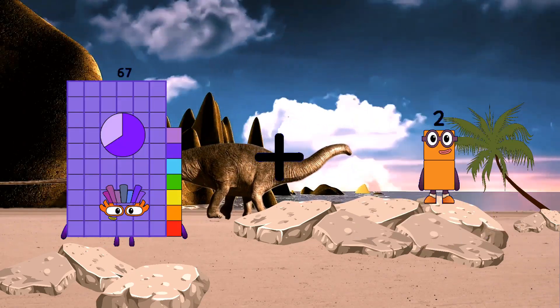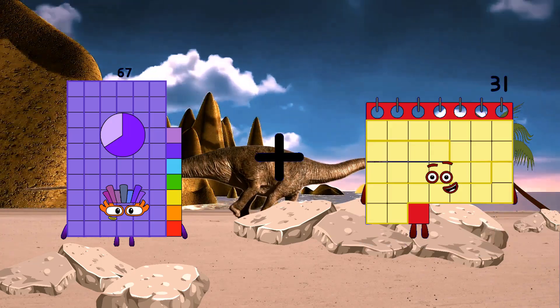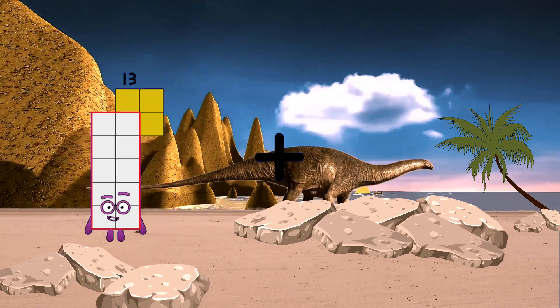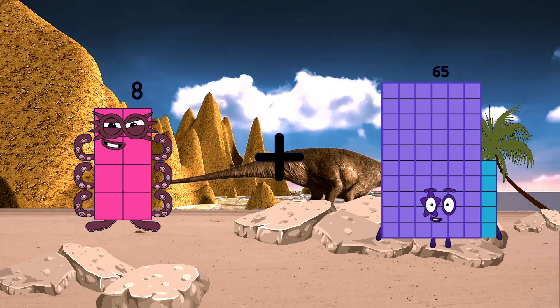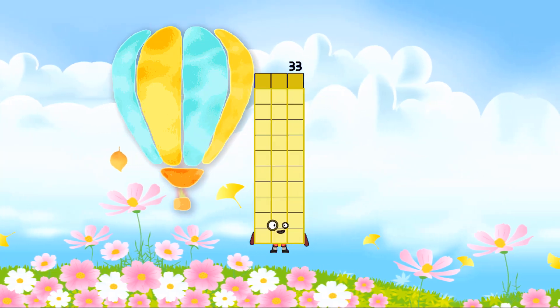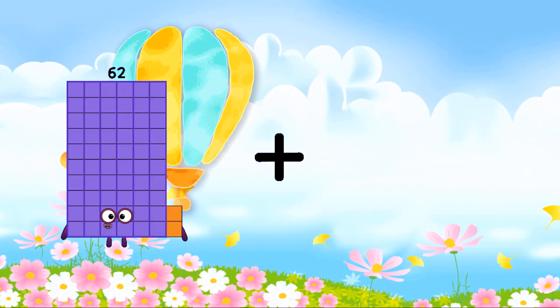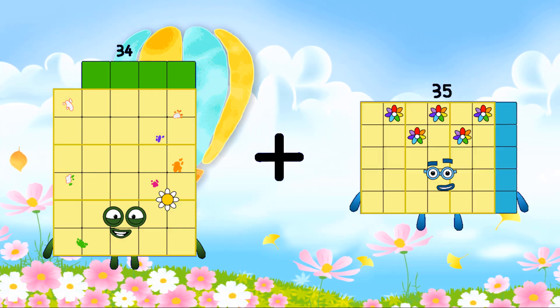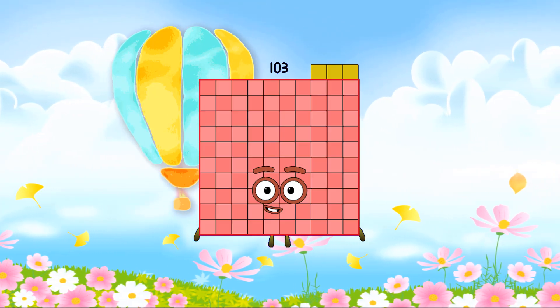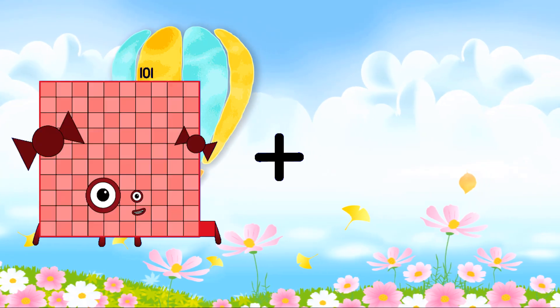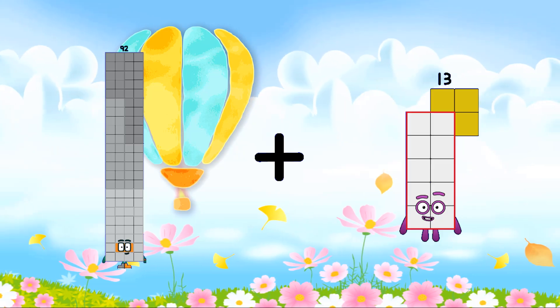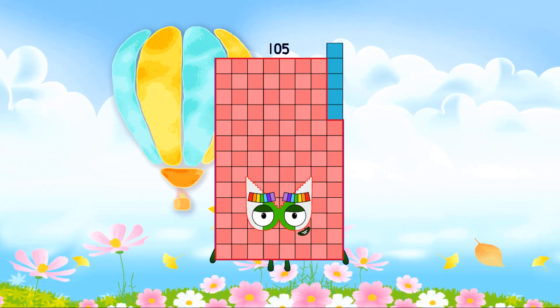67 plus 31 equals 98. 8 plus 25 equals 33. 34 plus 69 equals 103. 92 plus 13 equals 105.